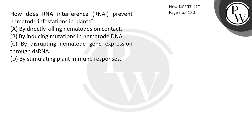How does RNA interference prevent nematode infestation in plants? How does it prevent nematode infection and what does it do? Simply, the nematode is Meloidogyne incognita, and it infects tobacco roots. In the roots, what does it do?